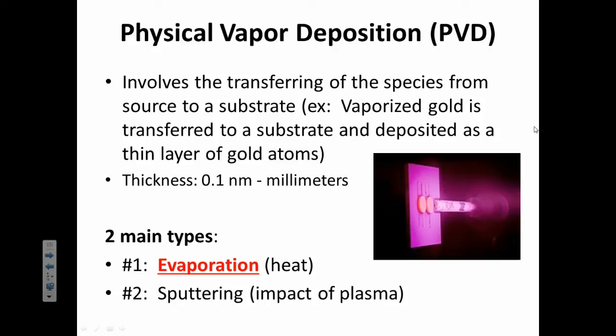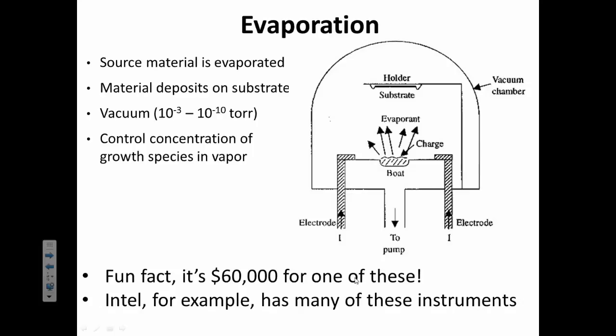There are two main types of PVD. There's evaporation, which involves heat, like I was just talking about, and then sputtering, which is something different that we're going to talk about. So, evaporation, this is what the instrument looks like. First, let's do the fun facts. It's about $60,000 for one of these. Intel, for example, has many of these instruments. They're trying to make computer chips.